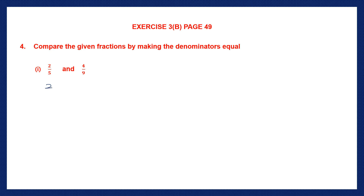So let's write down the two fractions: 2 by 5 and 4 by 9. The first thing we need to do is look at the denominators. The denominators are 5 and 9 — they're different. That means these are unlike fractions. So if we have to make the denominators equal, we have to find the LCM of the denominators.